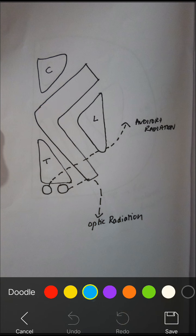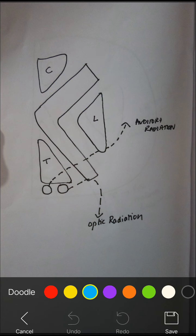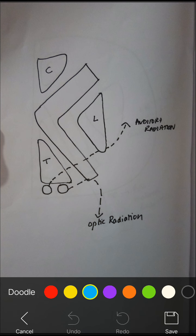The internal capsule has one anterior limb, one genu, and a posterior limb — these are the three main parts. Further, there are two more parts: one is called the sublentiform part, and one is called the retrolentiform part, which is in the most posterior one-third.